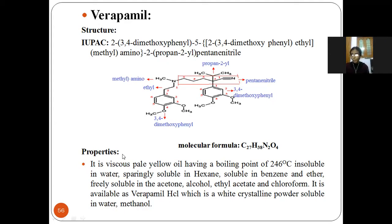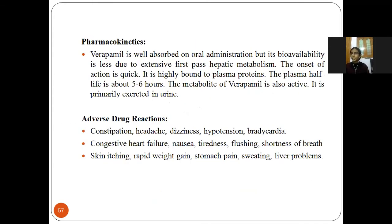Properties of verapamil: it is a viscous yellow liquid with a boiling point of 246°C, insoluble in water, sparingly soluble in hexane, soluble in benzene and ether, and freely soluble in acetone, alcohol, ethyl acetate, and chloroform. In crystalline powder form it is soluble in water and methanol. Pharmacokinetics: oral route of administration, undergoes first-pass hepatic metabolism, highly binds to plasma proteins, and is eliminated through urine.